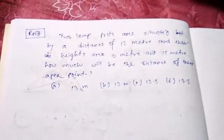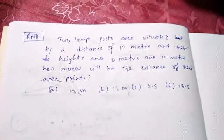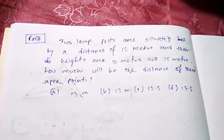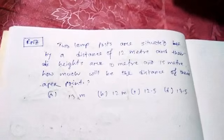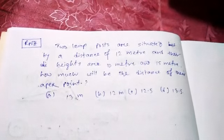In this problem, two lamp posts are situated at a distance of 12 meters and their heights are 10 meters and 15 meters.